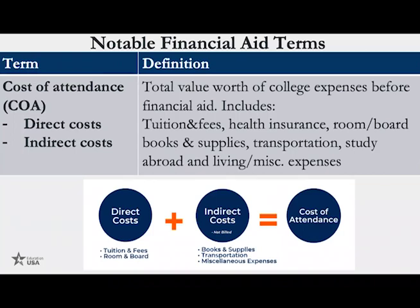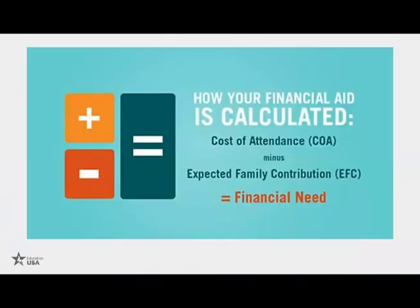Many people only think of tuition, but cost of attendance also includes transportation, books and supplies, health insurance, room and board, feeding, and miscellaneous expenses like an emergency hospital trip. Your cost of attendance includes direct costs — things you pay directly to the school like tuition, fees, health insurance, and on-campus housing — and indirect costs like books, supplies, and transportation, which you cover yourself or through financial aid.